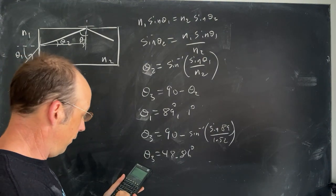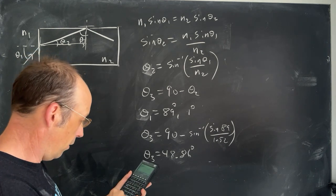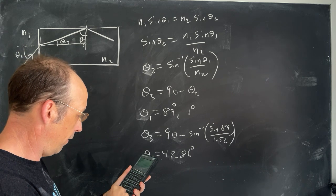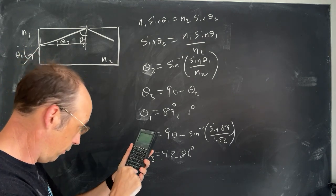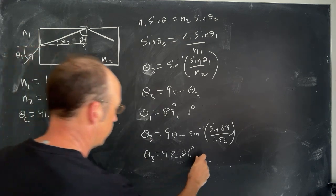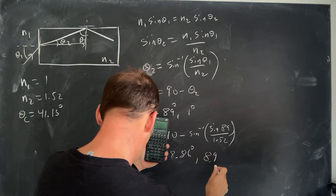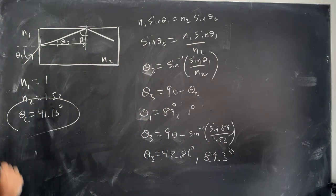Okay. So I have 90. Enter. And then I have the sine of 1. And then 1.52 divided by. And then the inverse sine. And then subtract that from 90. And I get 89. Again, I don't know if you're aware, but that's greater than the critical angle.